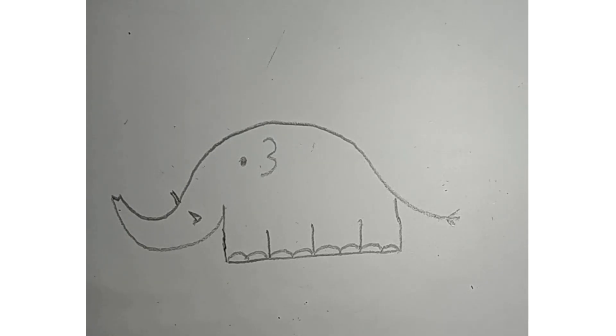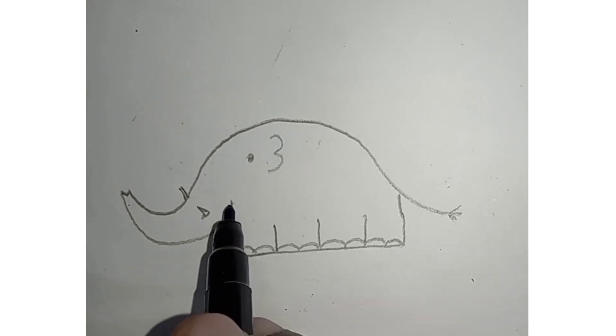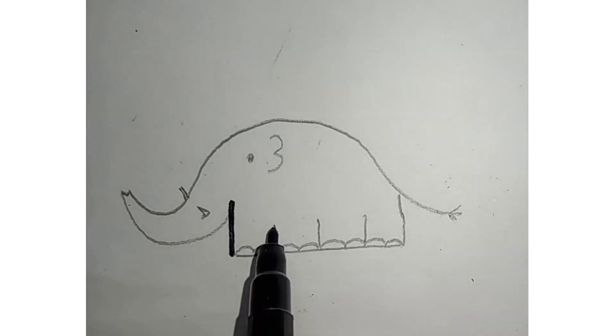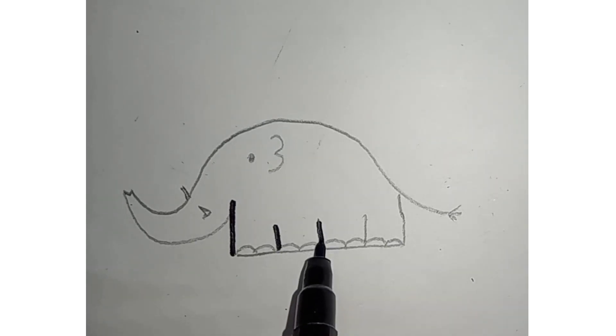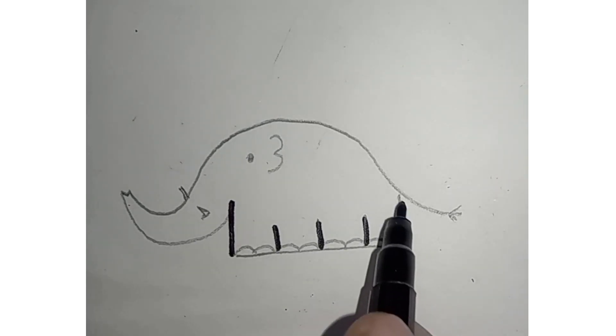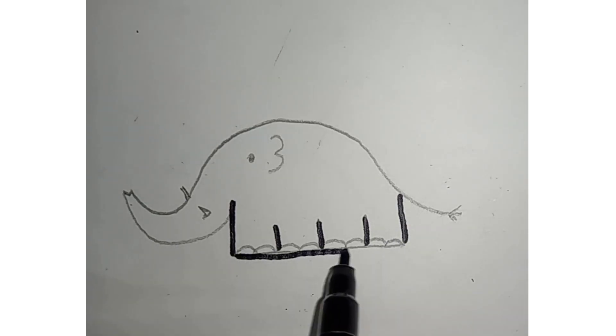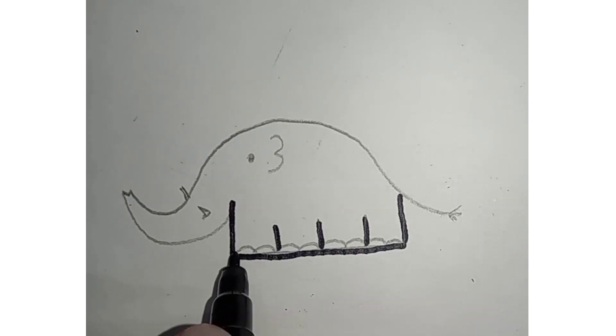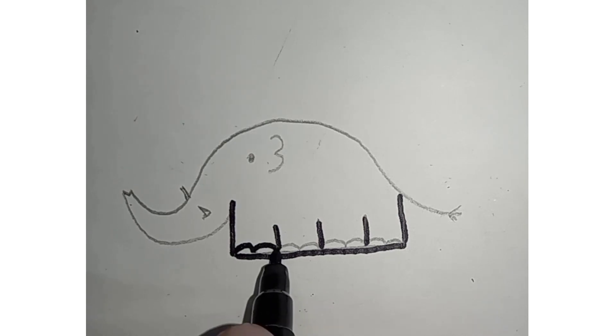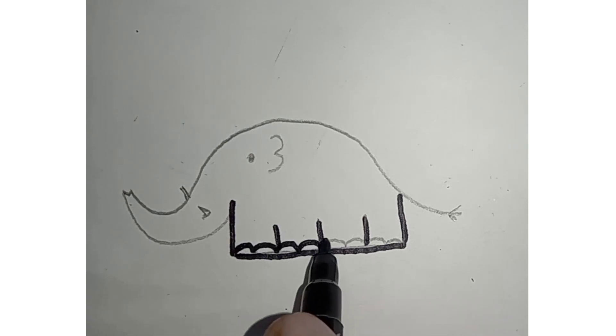So how is our flying elephant? Now we are going to outline the elephant. Yes. Why do we have to do this? We can do that with a black sketch in the first time itself. Right? Because we cannot erase it.